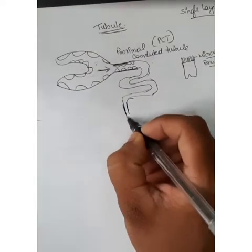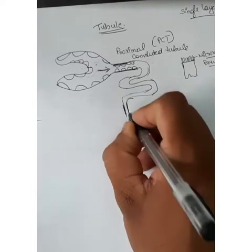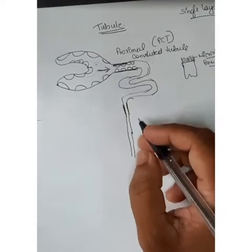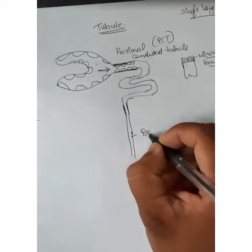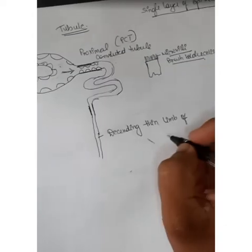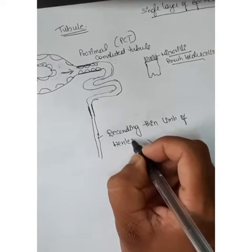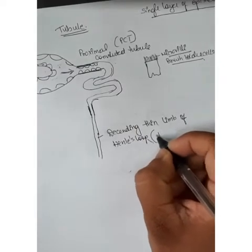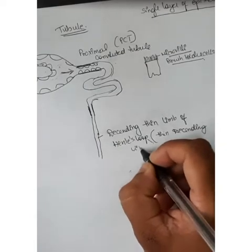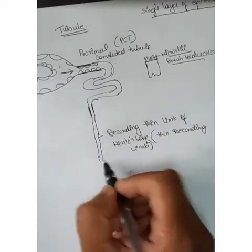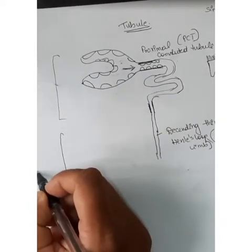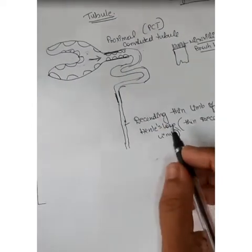After the small straight segment, the proximal segment drains into the loop of Henle. The first part where it drains is called the thin descending limb. This thin descending limb is located in the medulla, going deep inside the medulla.